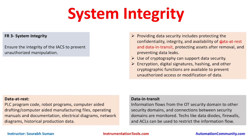Data security covers data at rest and data in transit. Data at rest refers to stored data, such as PLC program code, robot programs, CAD files, computer-aided manufacturing files, operating manuals, documentation, electrical diagrams, network diagrams, and historical production data. All of these are examples of data at rest.